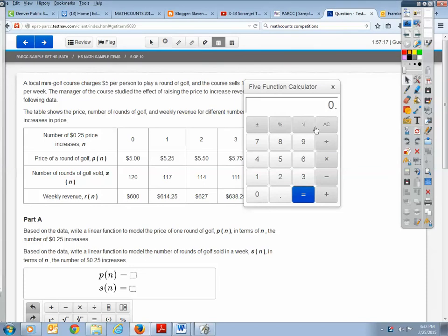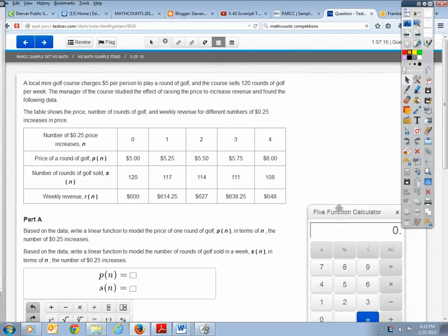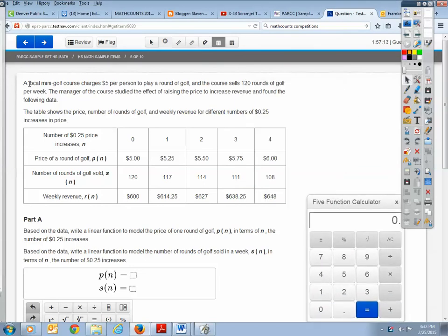So I'll just pull it out, make sure I have it ready. The question says a local mini golf course charges $5 per person to play a round of golf, and the course sells 120 rounds of golf per week. The manager of the course studied the effect of raising the price to increase revenue and found the following data.